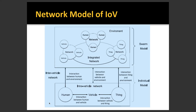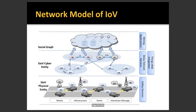This is a simpler way to understand the IoV infrastructure. We have vehicles talking to each other. We have devices with connectivity, showing how they connect to each other. They send data to the cloud, and this is how it looks in the cloud — processing everything centrally.